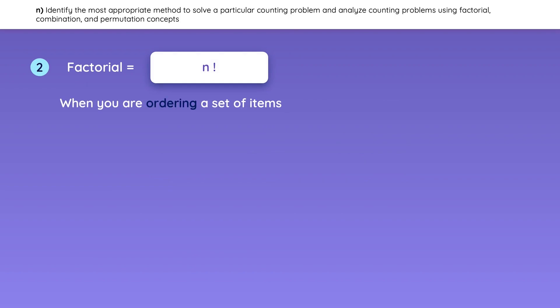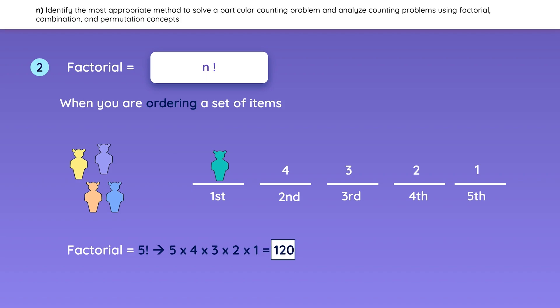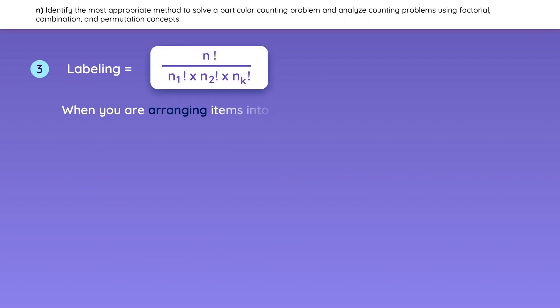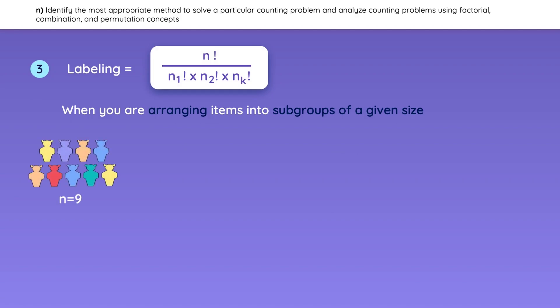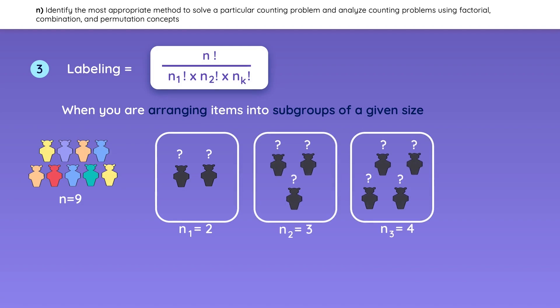Factorial is used when you are ordering a set of items — for example, assigning five people into five different slots. You have five people to choose from for the first slot; once you select the first person, you only have four people left for the second spot, and so on. That's what five factorial means — there are 120 ways to arrange these five people. Next we have labeling, which is used when arranging items into subgroups of a specific size. For example, you have nine students and must place two into the first group, three in another, and four in the last. Using the labeling formula, there are 1,260 ways to arrange the students.